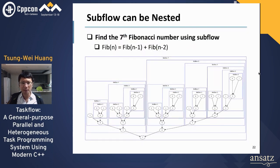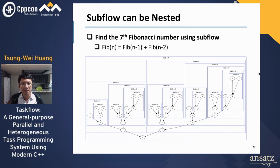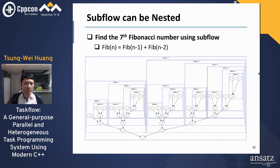Subflows can be nested — you can create a subflow from another subflow and so on. Here is an example of a task graph that finds the 7th Fibonacci number using subflow, a very common example for most parallel computing libraries to show recursive parallelism. The Fibonacci number is a series where each number is the sum of the previous two, and it can be computed with recursive parallelism.